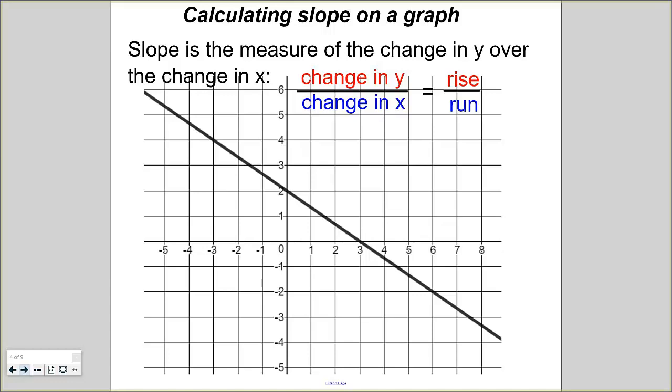Now slope is the measure of the change in y over the change in x. So I have that ratio right here, change in y over change in x, and some of you might know it better as rise over run.